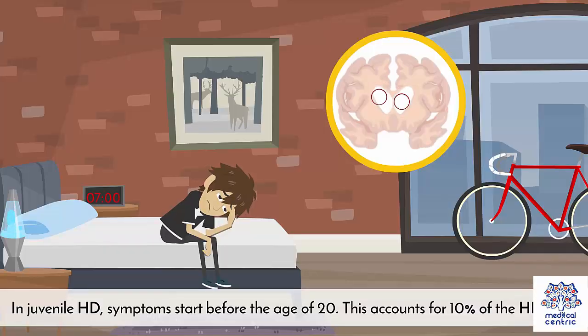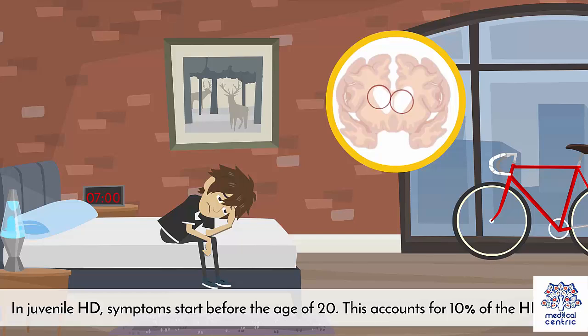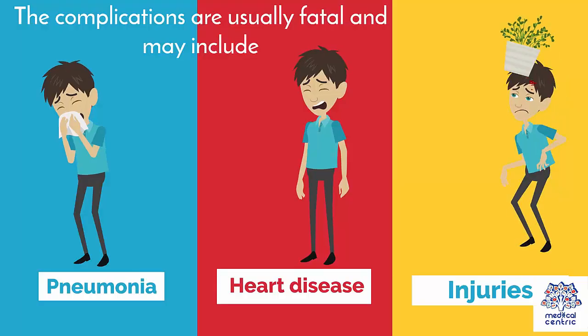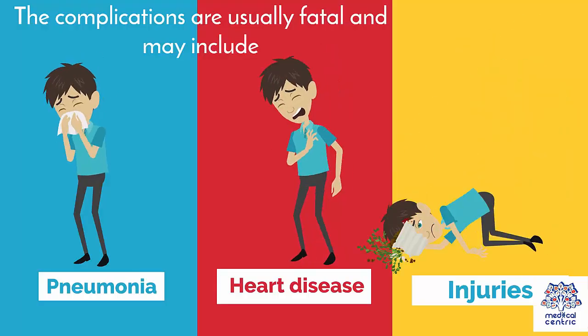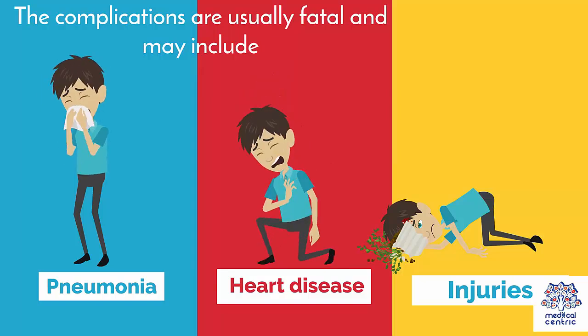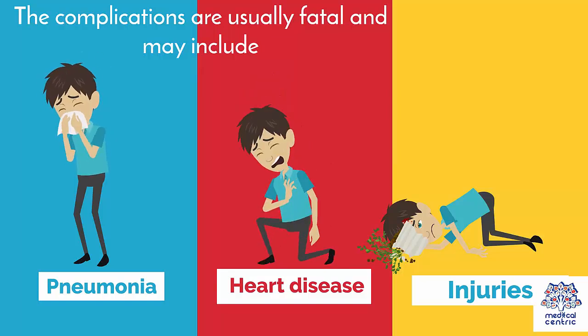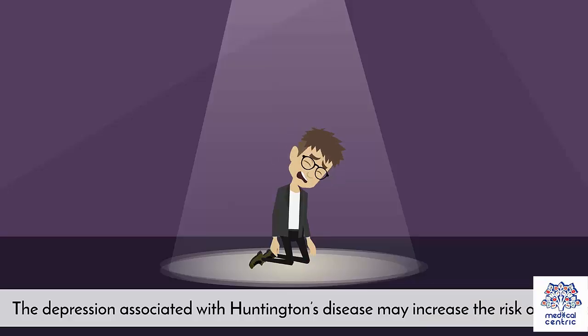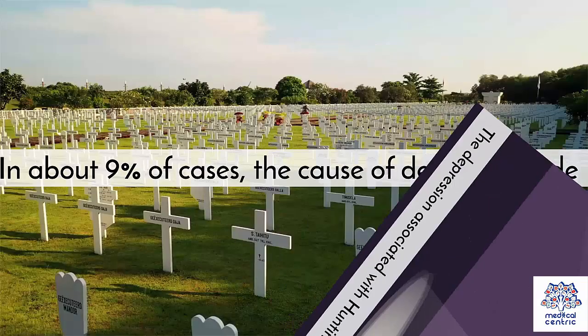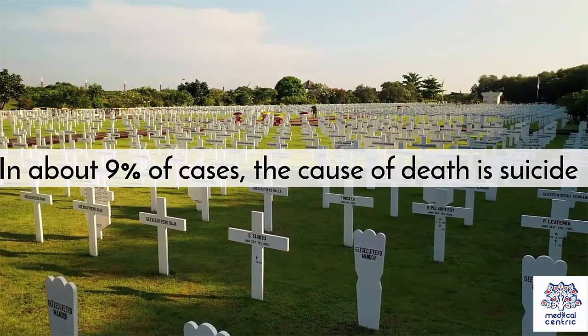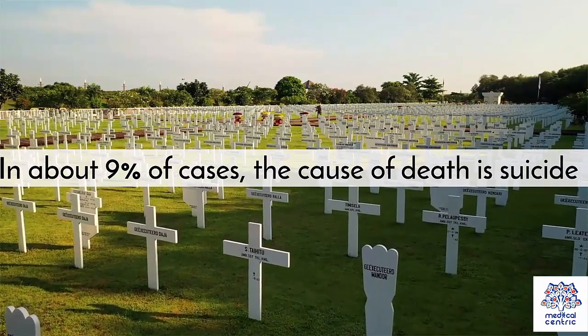In juvenile HD, symptoms start before the age of 20, and this accounts for 10% of HD cases. The complications are usually fatal and may include pneumonia, heart disease, and injuries related to falling. The depression associated with Huntington's disease may increase the risk of suicide, and in about 9% of cases, the cause of death is suicide.